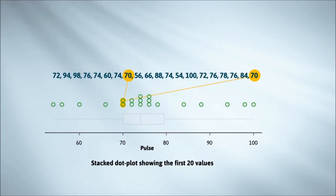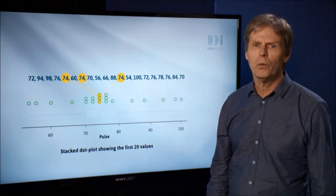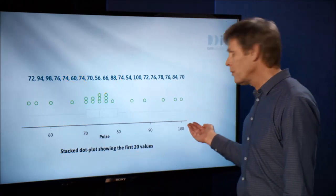Here we can see two people with a pulse rate of 70, and three with 74. Ignore the faded box shape at the bottom for now. These pulse rates go all the way from 54 to 100.